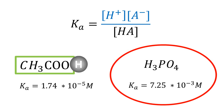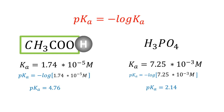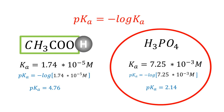Ka values have concentration units and tend to be large numbers that are difficult to read and compare. For simplicity, if we take the negative logarithm of this number, we obtain a new value called pKa, similar to pH, which is the negative logarithm of proton concentration. pKa values are easier to read and compare. In this case, a low pKa is an indicator of a strong acid, and vice versa.